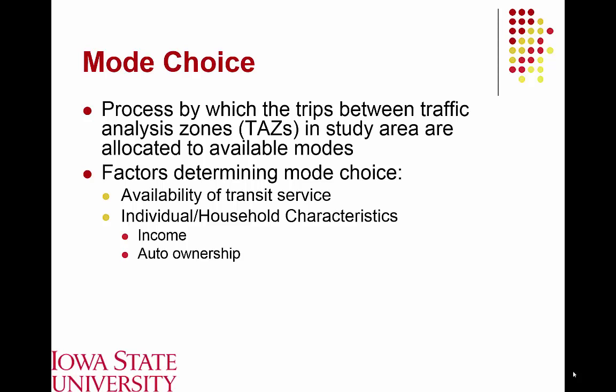We use the term 'captive' because they wouldn't really have another alternative. Another characteristic we can use to predict travel behavior is how many automobiles are owned by a specific household — the more automobiles you have, the more likely you would be to use that versus available transit modes. Once we've made determinations about the transit systems, the choice of whether to use transit or an automobile would relate back to measurable characteristics like travel time associated with getting from point A to point B.